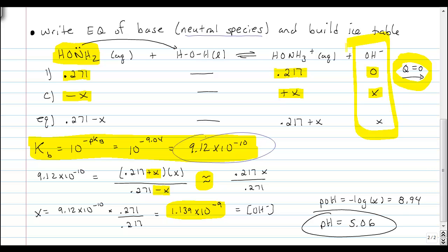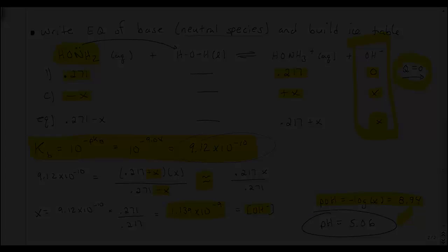Good news is x is related to the hydroxide. We see it right here. x is the hydroxide concentration, and therefore we can find the pOH very quickly, and from that we can immediately get the pH.